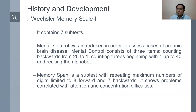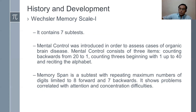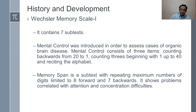Next is memory span — a subtest with repeating maximal numbers of digits, limited to 8 forward and 7 backwards. It shows problems correlated with attention and concentration difficulties. The examinee repeats maximum numbers — for example, 7, 8, 5, 4 — then repeats them in reverse: 4, 3, 2, 1, and the examiner responds 1, 2, 3, 4.